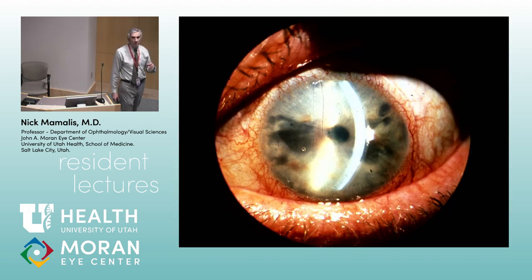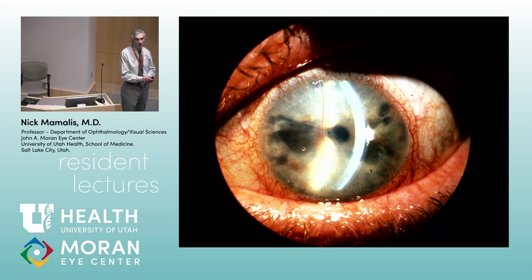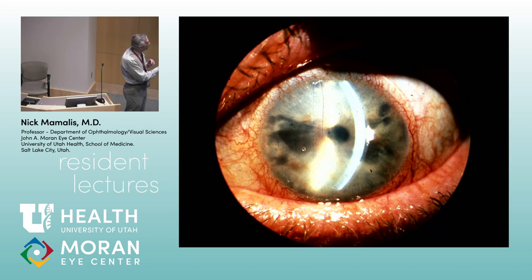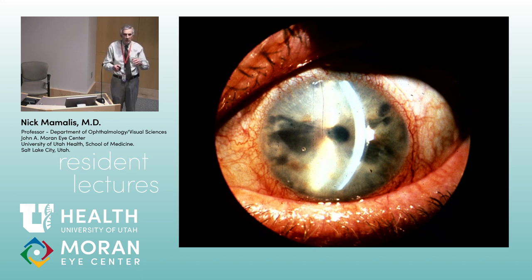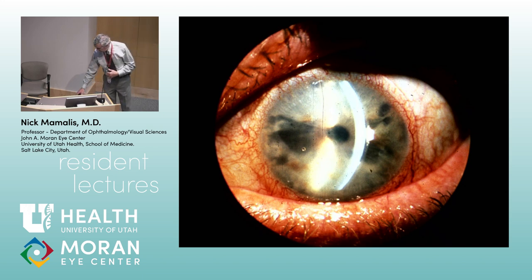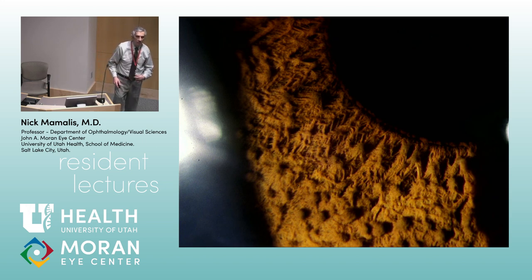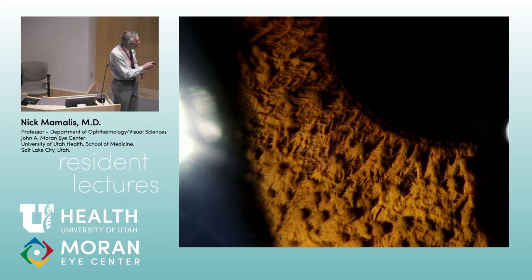The second subset of ICE where you get lots of corneal problems is Chandler's syndrome. In Chandler's you still get some moth-eating iris and glaucoma, but you get a lot of corneal edema. When people were first looking at these many years ago, they each put their own name or description on them, and eventually someone put them all together and said these are just variations of the same entity. So Chandler's is ICE syndrome with lots of corneal edema. The third entity is iris nevus syndrome, or Cogan-Reese syndrome — you get this velvety almost-membrane on the surface of the iris with these little knuckles of nevus cells popping up.